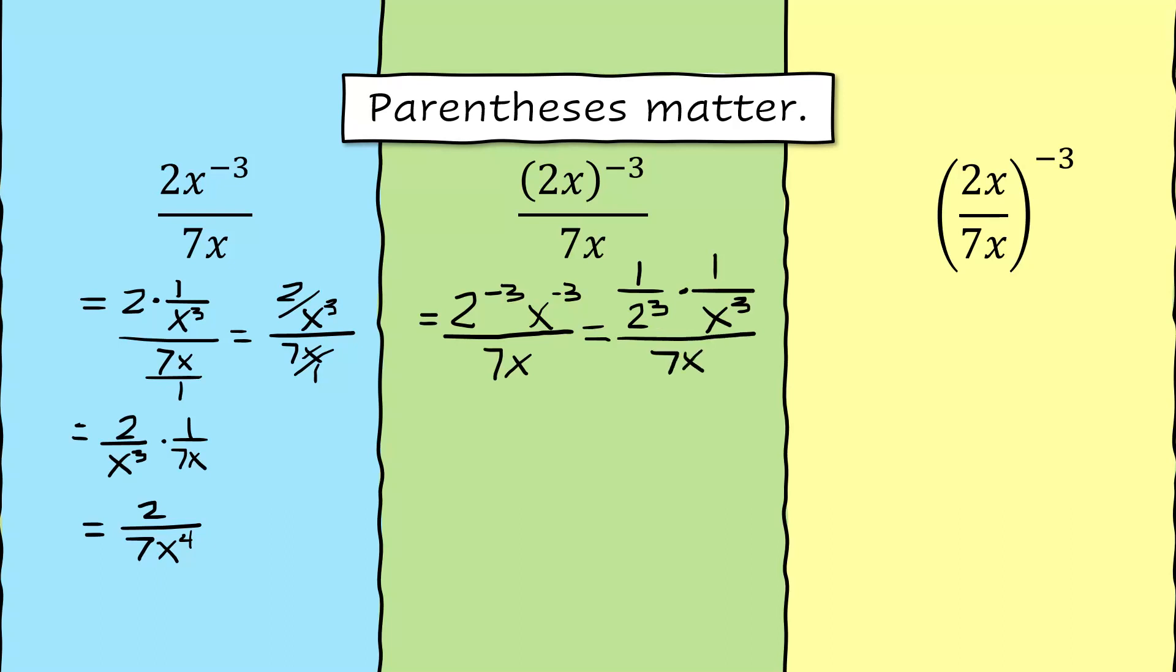Simplifying all of this, we end up with 1 over 2 cubed times 1 over x cubed, which is just the numerator recopied, but now instead of dividing by 7x, we're going to multiply by 1 over 7x, which is the same thing as dividing, but it makes it easier to do.